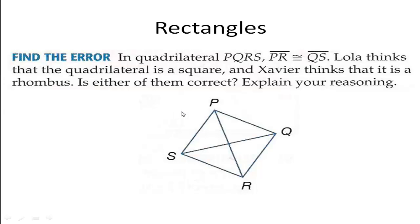Next example: find the error. In quadrilateral PQRS — notice it says quadrilateral, not parallelogram or rectangle — PR is congruent to QS, meaning the diagonals are congruent. Lola thinks the quadrilateral is a square, and Xavier thinks it is a rhombus. Is either of them correct? Explain your reasoning.